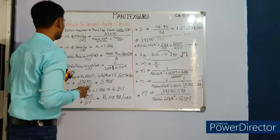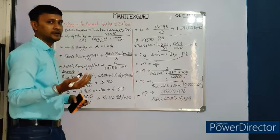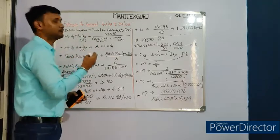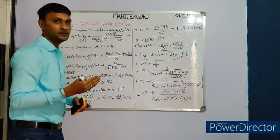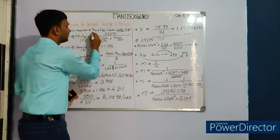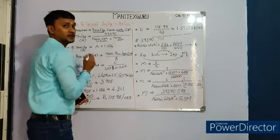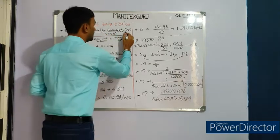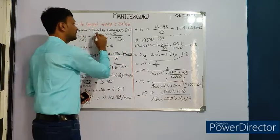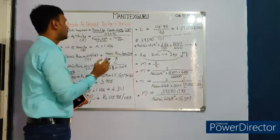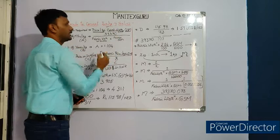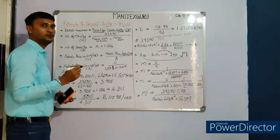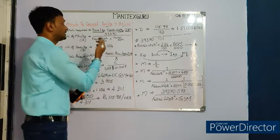What details do we need to convert Indian rupee per kg to yard per USD? Three values are required: price per kg, fabric width in inches, and GSM. With just these three data points we can convert the INR per kg into USD per yard.